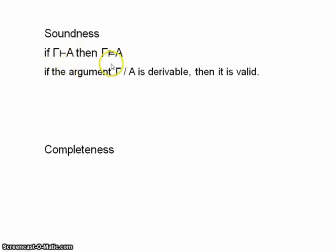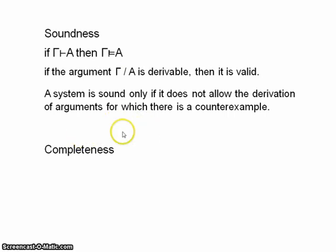So if an argument is derivable, then there is no interpretation that makes the premises true and the conclusion false. So it has no counterexample, basically. And the system is sound only if it does not allow the derivation of arguments for which there is a counterexample.